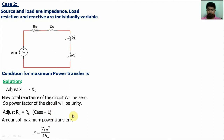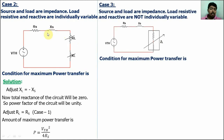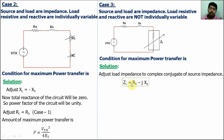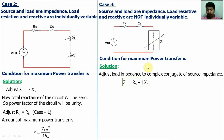Case 3: source and load are impedance, but the load resistance and reactance are not individually variable — they are combined variables. For this case, if ZL is equal to the complex conjugate of the source impedance, the power will be maximum. Because when ZL equals RS minus jX, the reactive part of the source impedance is compensated, so there is no reactive effect, and RL equals RS. Definitely the power will be maximum power transfer with these conditions.